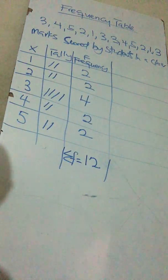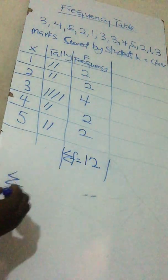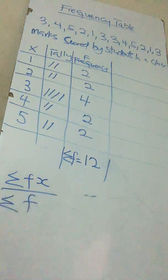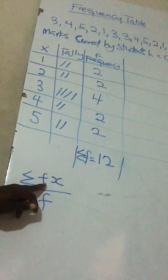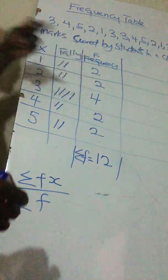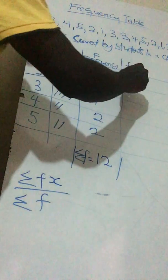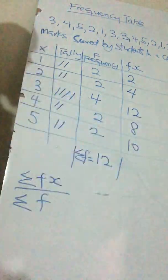Sometimes they will ask you to find the mean. The formula for the mean is sigma fx over sigma f. We already know our sigma f is 12. We don't know fx yet, so fx means we multiply the frequency by the mark. So: 1 times 2 is 2, 2 times 2 is 4, 3 times 4 is 12, 4 times 2 is 8, and 5 times 2 is 10.